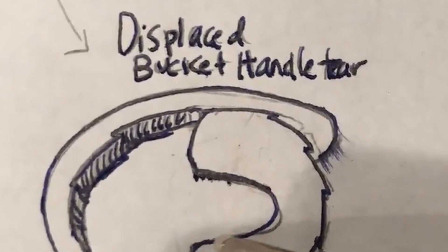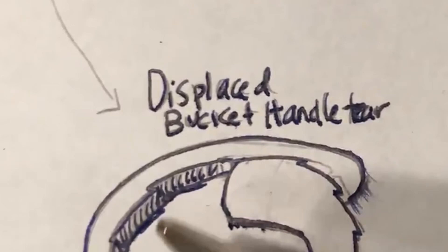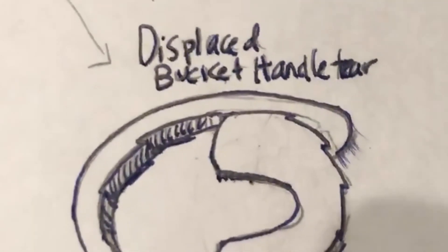Why is it called a bucket handle tear? Because it actually looks like the handle of a five gallon bucket and can go back and forth like a bucket handle.